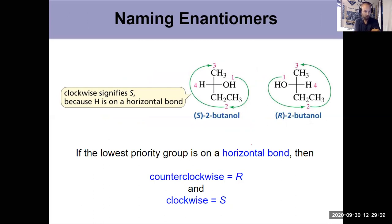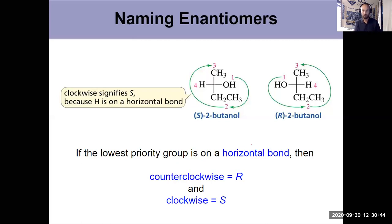The big takeaway from this video: know how to assign priorities, identify an asymmetric center in the presence of enantiomers, and name them as R or S — just like naming things as E or Z in the first video. For example, 2-butanol is not a complete name; you would have to say R-2-butanol or S-2-butanol. This will seem daunting at first — enantiomers are one of the most difficult concepts in organic because you have to identify things in 3D. Use your model kit, identify your groups, and practice assigning R and S. Practice is the key — don't panic, just practice.